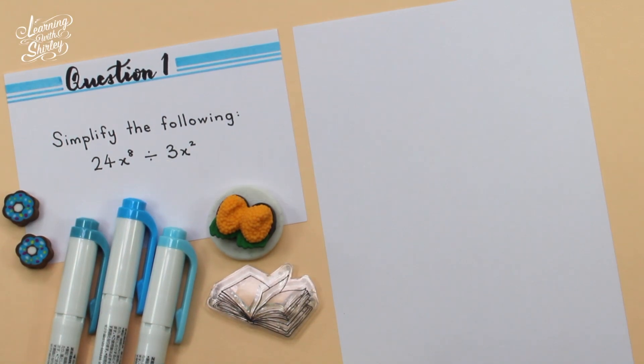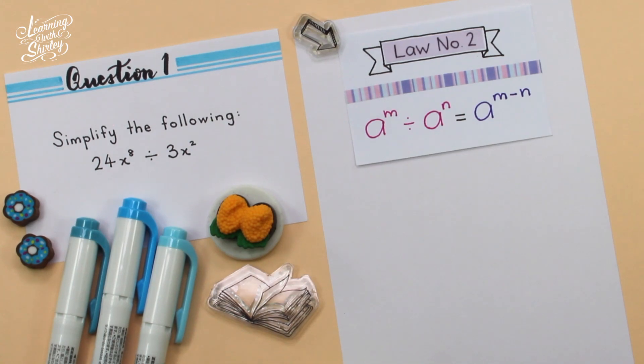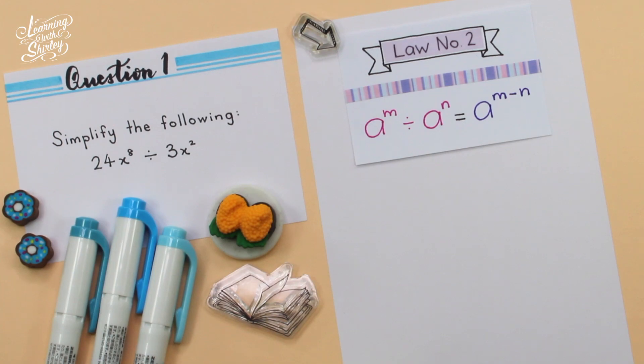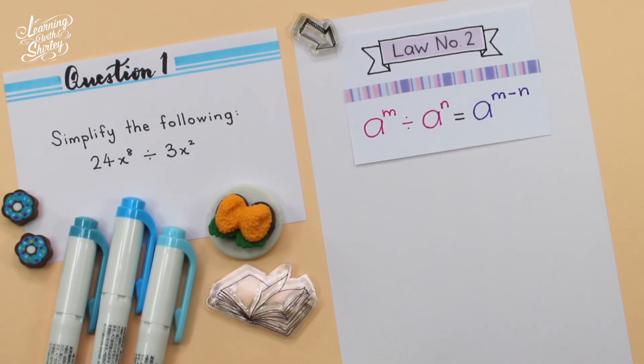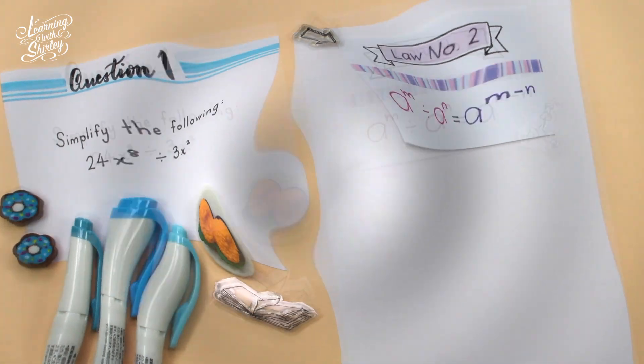For question number 1, simplify the following: 24x to the power of 8 divided by 3x square. To solve this question, we use law number 2, which is a to the power of m divided by a to the power of n equals a to the power of m minus n, which means the quotient of two numbers in index form with the same base can be obtained by subtracting the indices of both numbers.